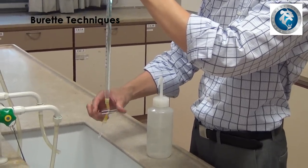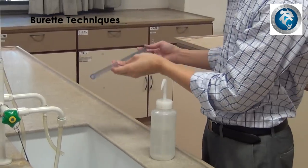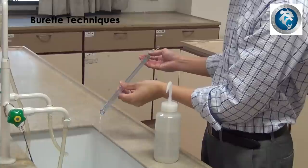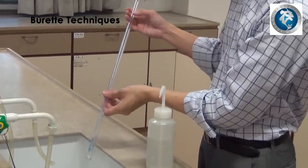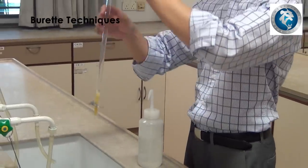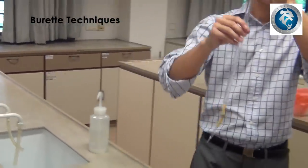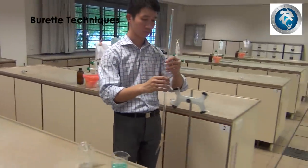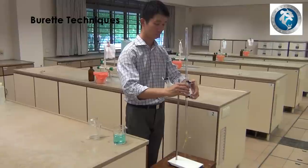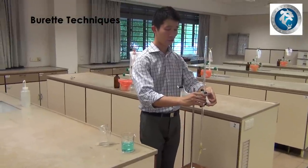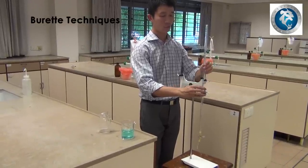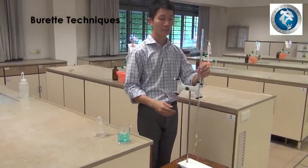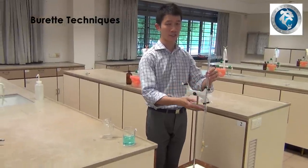Once that is done, rinse the top of the burette. Clip the burette back onto the retort stand. While doing this, make sure that the burette sits nicely onto the grooves of the clamp.